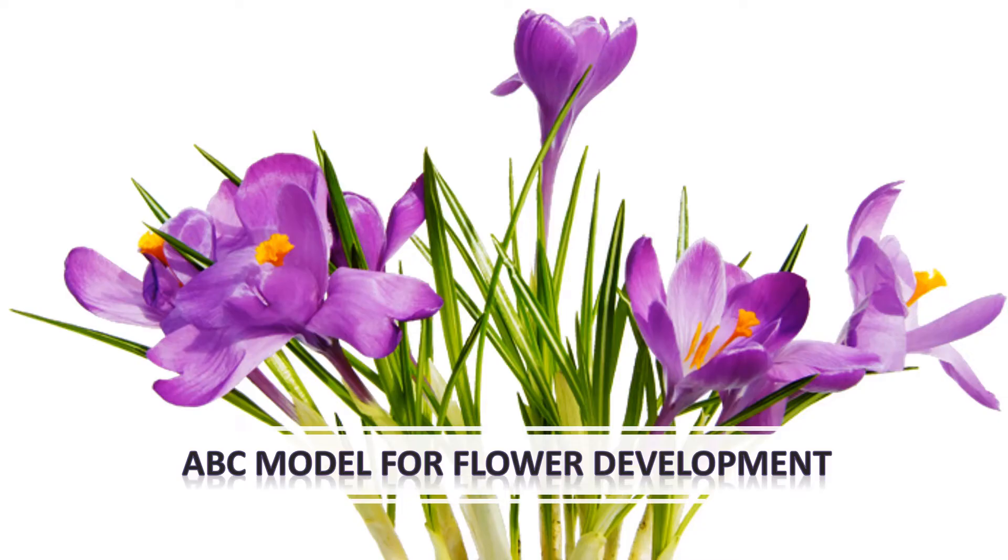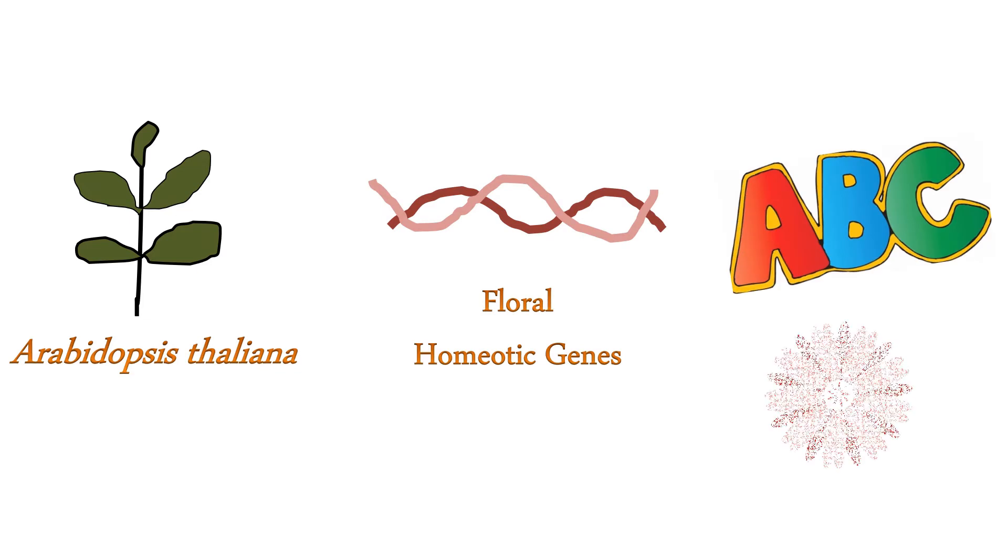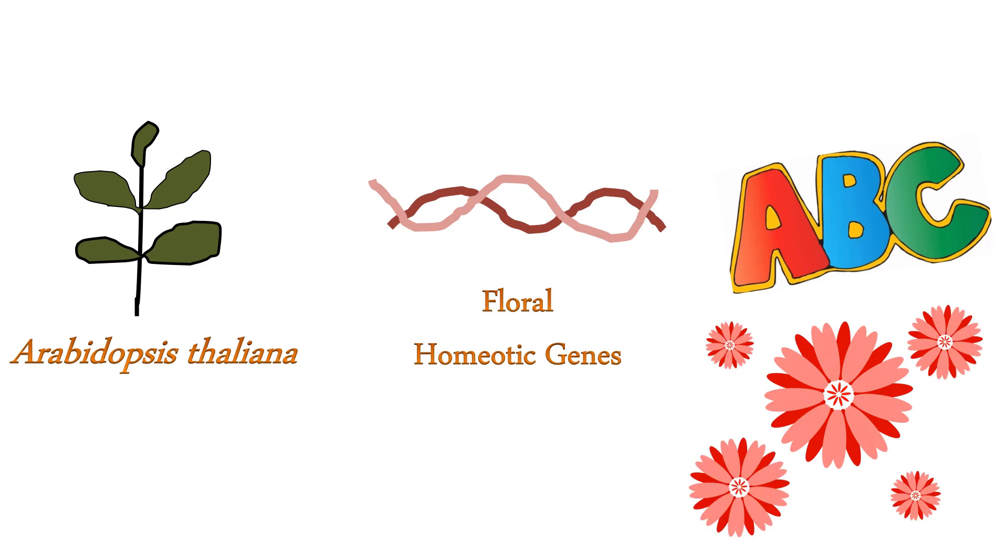Let us understand the ABC model for flower development. In the early 1990s, genetic studies on Arabidopsis thaliana and Antirrhinum majus led to the isolation and characterization of floral identity genes, also called floral homeotic genes, and the establishment of the ABC model for flower development. This model proposed that different organ identity genes act alone and in various combinations to specify each of the four types of floral organs.